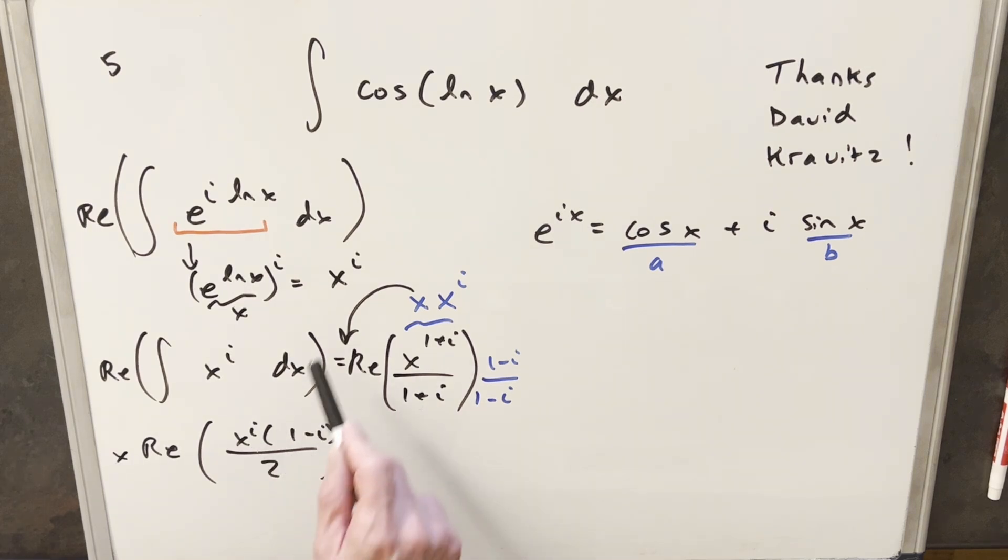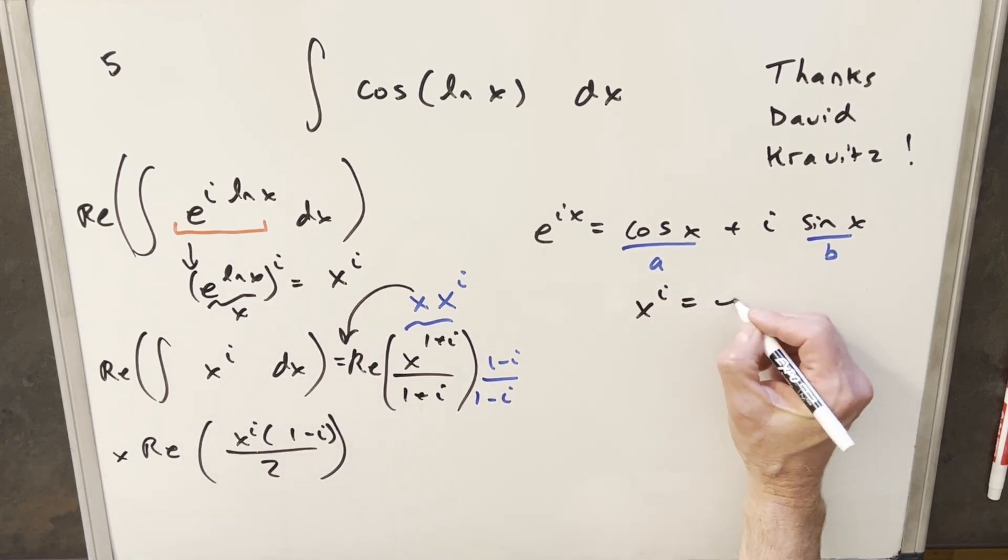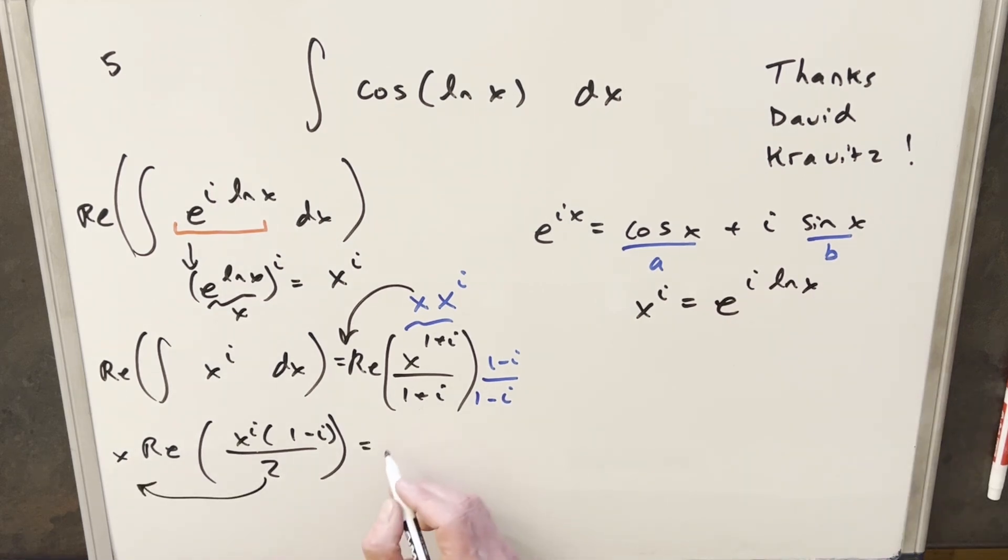But now for this x to the i, I can actually put this back. We just did this thing over here. We need to go backwards and we can say x to the i is the same thing as e to the i ln x. So we'll bring this 2 out front. Now we have x over 2 here. Now at this point, I can plug in my x to the i. But just notice e to the i ln x,